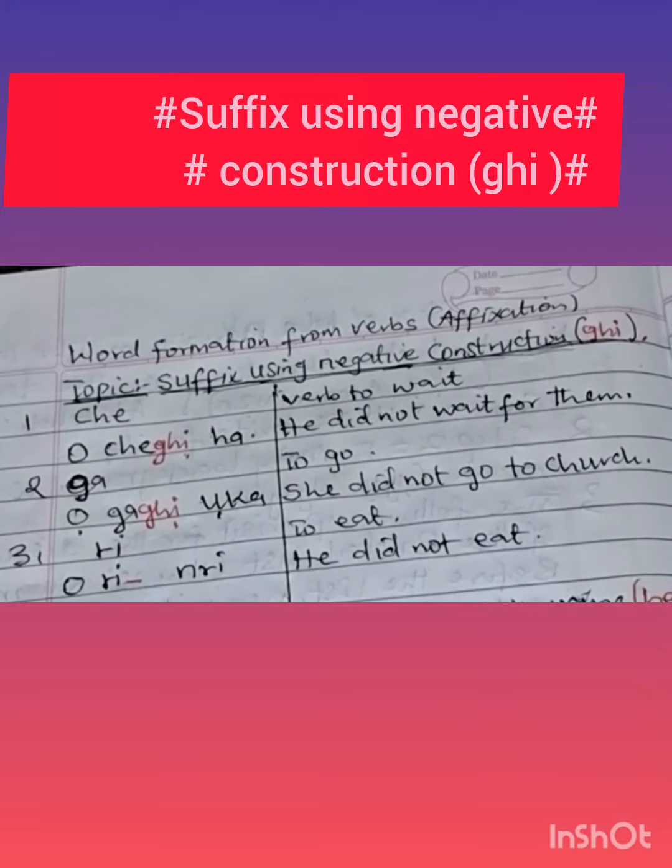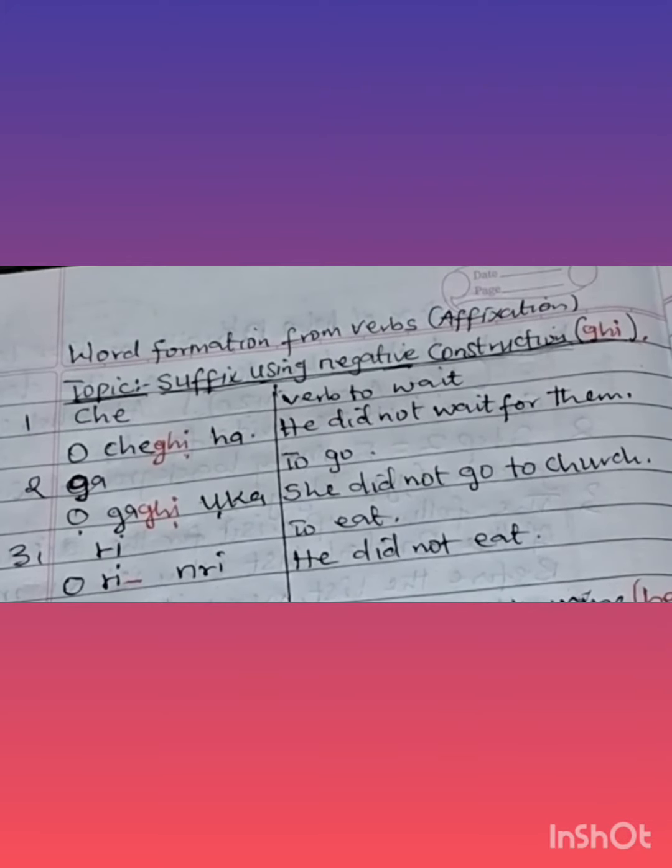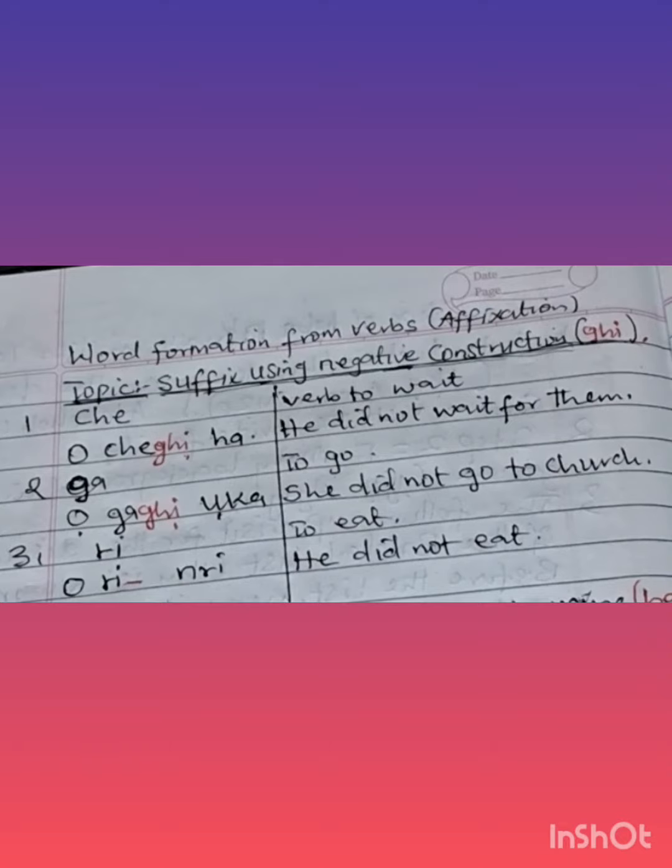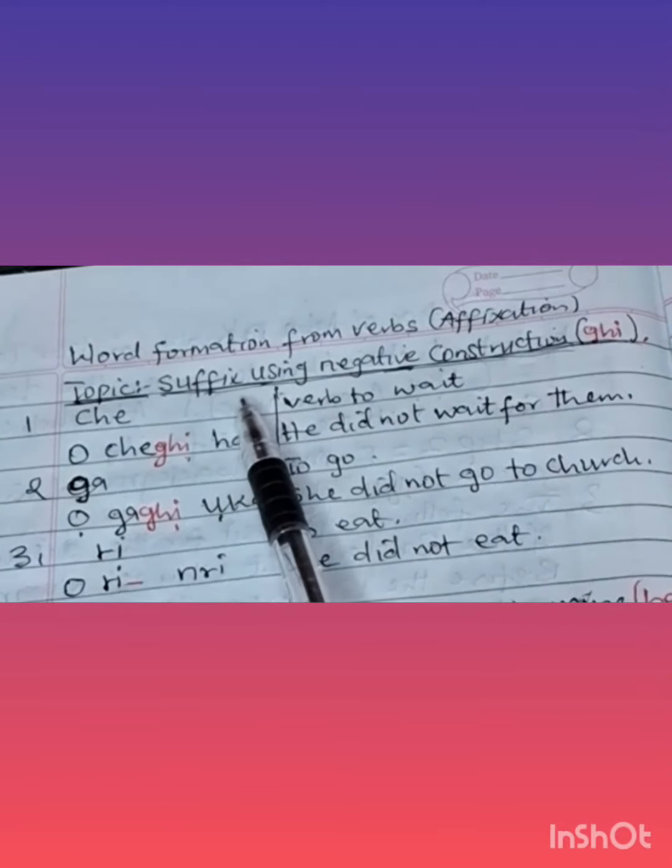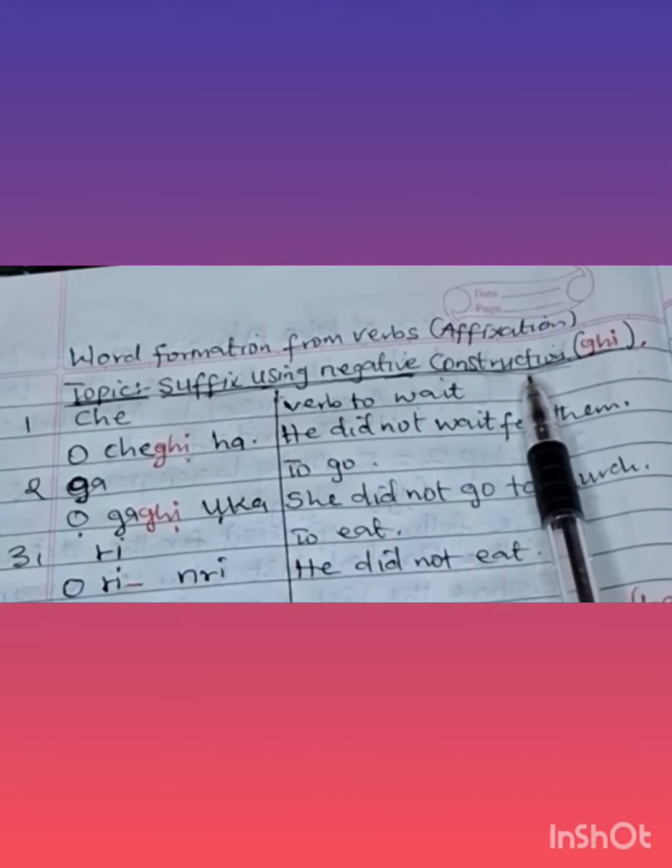We have Igbo language, still on word formation from verbs under affixation. Topic says, suffix using negative construction.